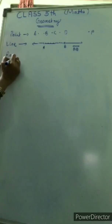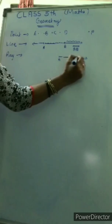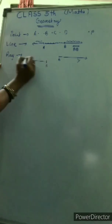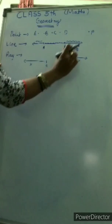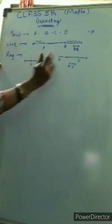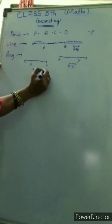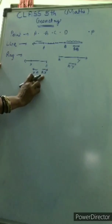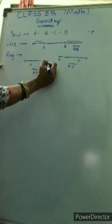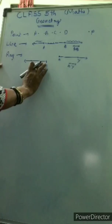Then we come to ray. Suppose I take this portion — this is your B, Y — and I take the left side portion — this is your A, X. Now this forms a ray. A ray is a part of a line. It can be written as BY with an arrow on the Y side, and AX with an arrow on the X side. A ray has three properties: it has only one end point, it can extend in one direction only, and it has no definite length.